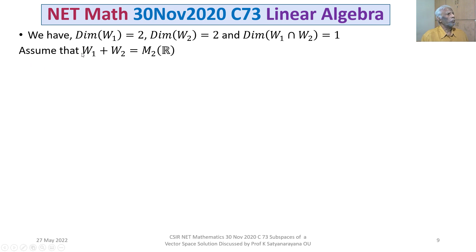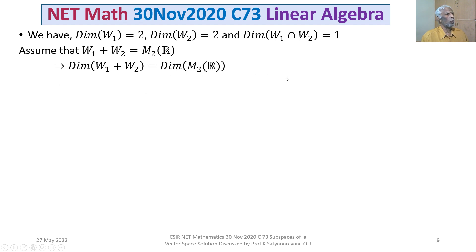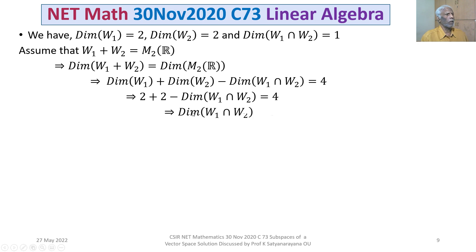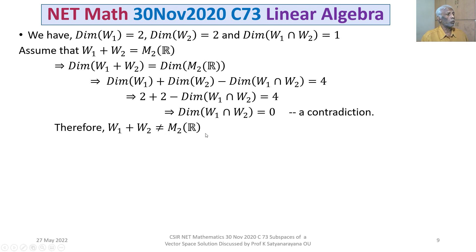We now show that W1 + W2 is not equal to M2 over R. Assume the contrary: W1 + W2 = M2 over R. Then taking dimensions on both sides and using the dimension formula, dim(W1 + W2) = dim(W1) + dim(W2) - dim(W1 ∩ W2) = 2 + 2 - dim(W1 ∩ W2) = 4. This gives dim(W1 ∩ W2) = 0, a contradiction since we showed it equals 1. Therefore W1 + W2 ≠ M2 over R.